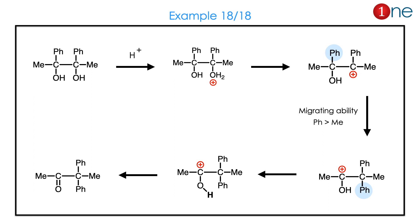Let us look at the next question, which is a very obvious one. Protonation and cation formation occur. You should know the migrating ability: phenyl has higher migration ability than methyl. So phenyl migrates, cation forms, and it is quenched as the ketone. It is obvious, but you must know the migrating ability.